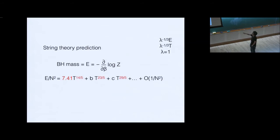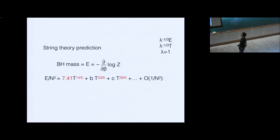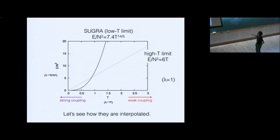From the gravity side, we can determine a very strange expansion. The leading part is supergravity: 7.41 times T to the power 14/5 — this is an analytically calculable number from dual geometry. This supergravity prediction is the leading term; higher powers in T correspond to string alpha-prime corrections. The alpha-prime cubed correction and alpha-prime to the fifth correction follow, and though we don't know the coefficients, we know the powers from string theory knowledge.